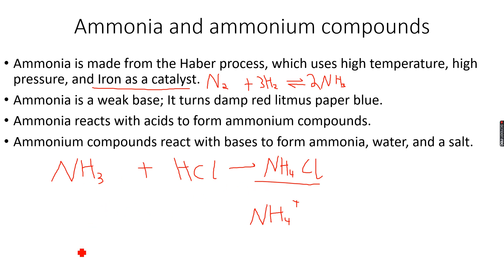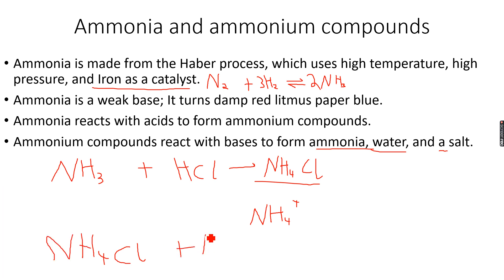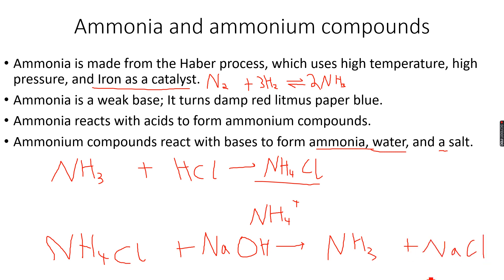Ammonium compounds react with bases to form ammonia, water, and a salt. For example, when NH₄Cl reacts with NaOH — which is a base — we get NH₃ (ammonia), plus NaCl (sodium chloride, the salt), plus water. This is what happens when ammonium compounds react with a base.